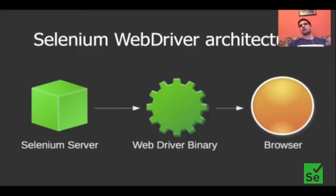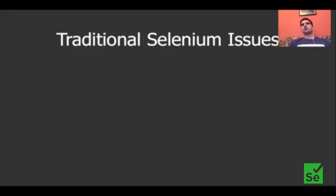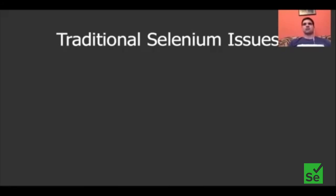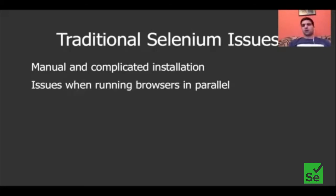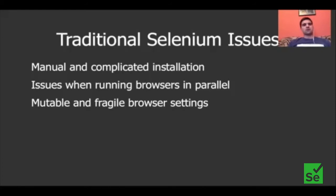I'm speaking about Selenium server. It has manual and complicated installation — you need to download and install Java, jar files, run everything manually. You can also have a lot of issues when running browsers in parallel; your tests can be slow, can freeze. By default, Selenium server is using mutable browsers with mutable settings — you can accidentally go to browser settings, configure a proxy server incorrectly, and everything will stop working. Browsers are fragile. It's also difficult to run several different versions of the same browser on the same host, because installing a new browser version will completely remove the older one.